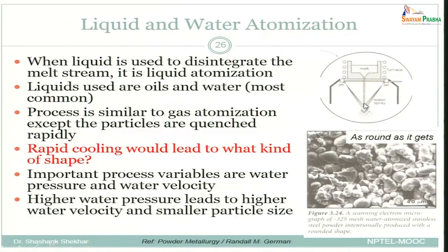The overall principle is still the same, however some additional parameters start to affect the process and the empirical relation is a little different. The angle alpha at which the water spray strikes the melt is now important. P is a constant incorporating both material and atomization technique parameters, and V is the water velocity — these are the parameters that affect water atomization and the resulting particulate size.